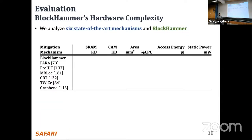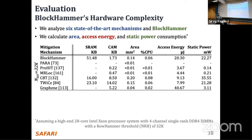For evaluation, we analyze and compare BlockHammer's hardware complexity with six state-of-the-art Rowhammer mitigation mechanisms: PARA, ProHIT, MR-Log, CBT, TRR, and Graphene. We calculate hardware complexity in terms of area, access energy, and static power consumption, using a realistic Rowhammer threshold of 32K.